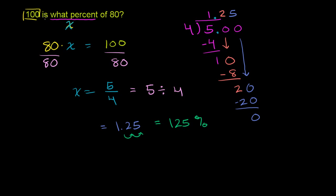And that makes complete sense. 100 is 125% of 80. 80 is 100% of 80. 100 is more than 80. It's actually 1 and 1 fourth of 80, and you see that right over there. So it makes sense that it's 125%. It's more than 100%. But we are done. We've solved the problem. It is 125% of 80.